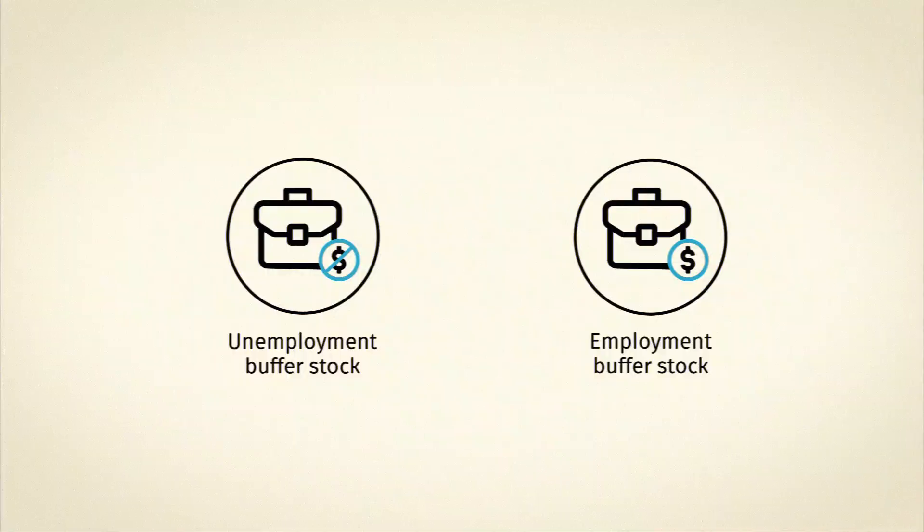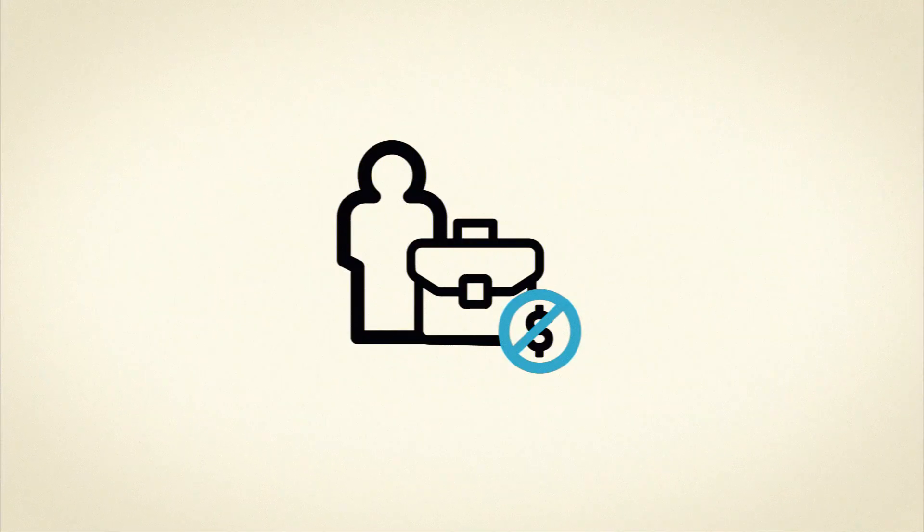In MMT we deal with the inflation issue by contrasting two buffer stocks available to a currency-issuing government that wants to maintain price stability: an unemployment buffer stock, which is the conventional way, and the employment buffer stock. One of the problems of using the unemployment buffer stock mechanism is that it's a very successful way to discipline price pressures in the market because it creates unemployment and makes workers reluctant to push for wage increases, and it forces business firms to suppress their price decisions because sales are dropping off and they don't want to lose market share.